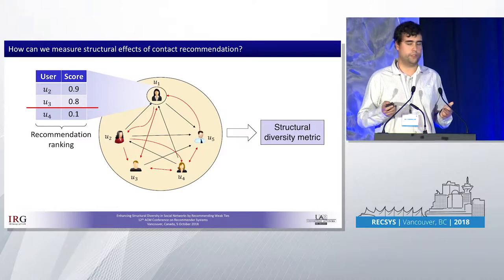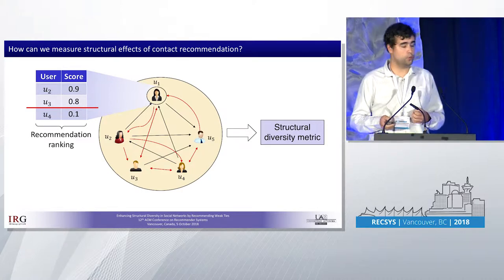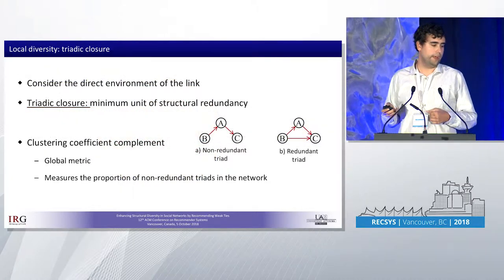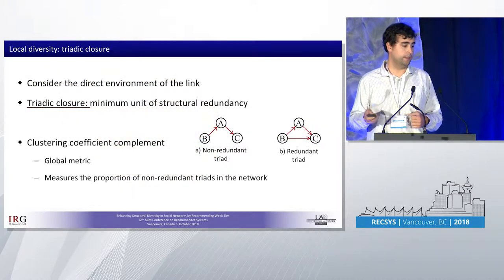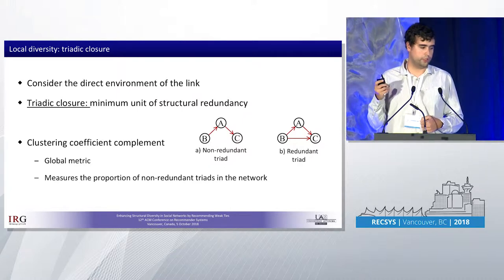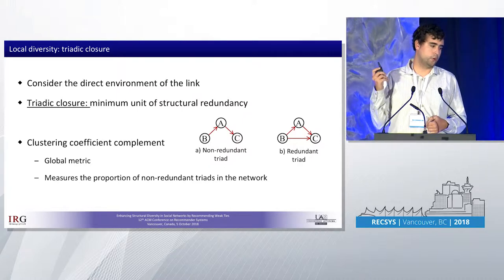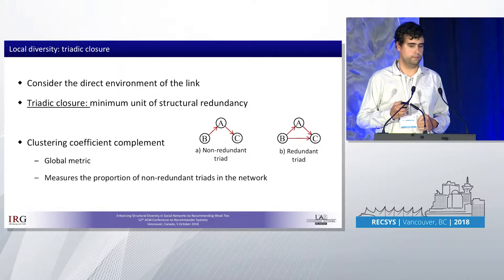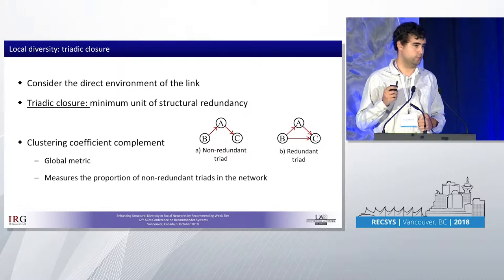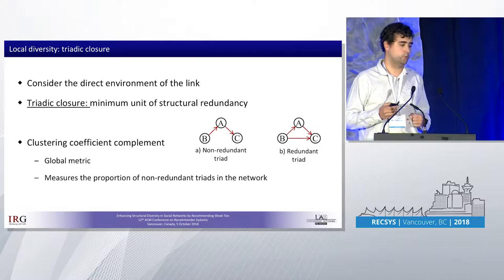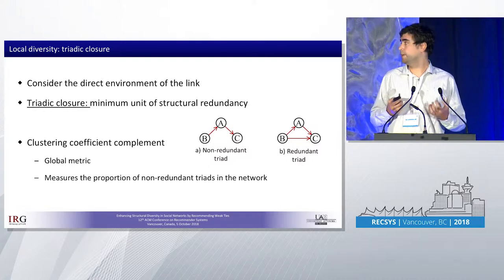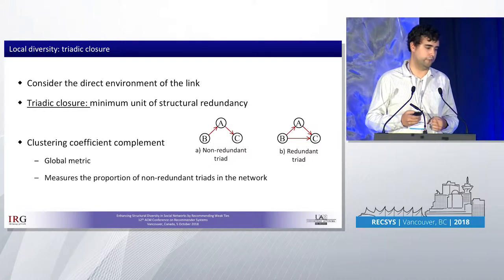But how are we going to measure metrics that reward structural diversity? First, we take the social network and generate recommendations for each user in the network. Then, from the recommendations, we take the top-K recommended links and add them to the network. We repeat this for all the users in the network and obtain an enhanced graph, which we can use to measure the structural diversity metrics and analyze the corresponding effects.